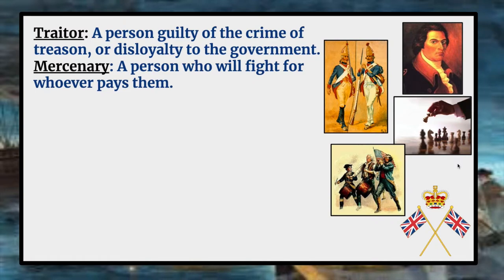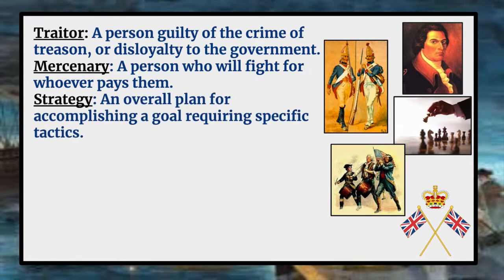Our next term is mercenary — a person who will fight for whoever pays them. Later on, you'll find out that the British hired mercenaries to fight against the colonists in the Revolutionary War. Our next term is strategy, which is an overall plan for accomplishing a goal that requires specific tactics. One of the things we are going to be learning about is the strategy the colonies had for dealing with the king of England and the British government.